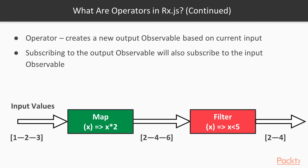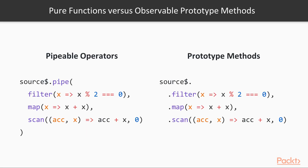So what is the difference and which one should we use? Here are two code examples — one uses pipeable operators and another one uses prototype methods. They both do the same. As you can see, pipeable operators are just standalone functions, and starting from RxJS version 5.5, they are announced as the preferable way of using operators.